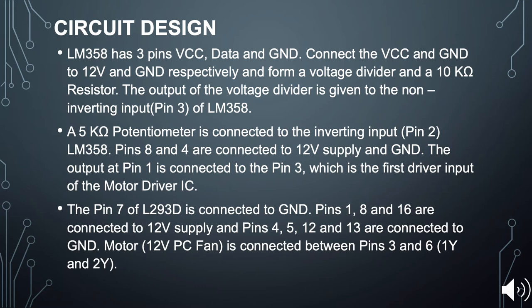The output at pin 1 is connected to pin 3 of the motor driver IC. For the L293D, pin 7 is connected to GND; pins 1, 8, and 16 are connected to the 12V supply; and pins 4, 5, 12, and 13 are connected to GND. The 12V PC fan is connected between pins 3 and 6. The next section will explain more through pictures.